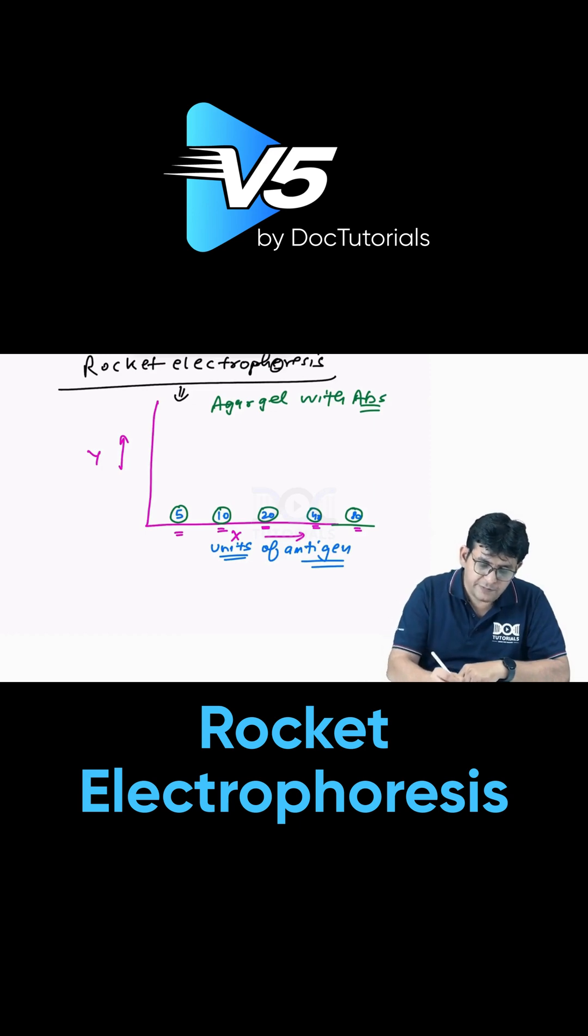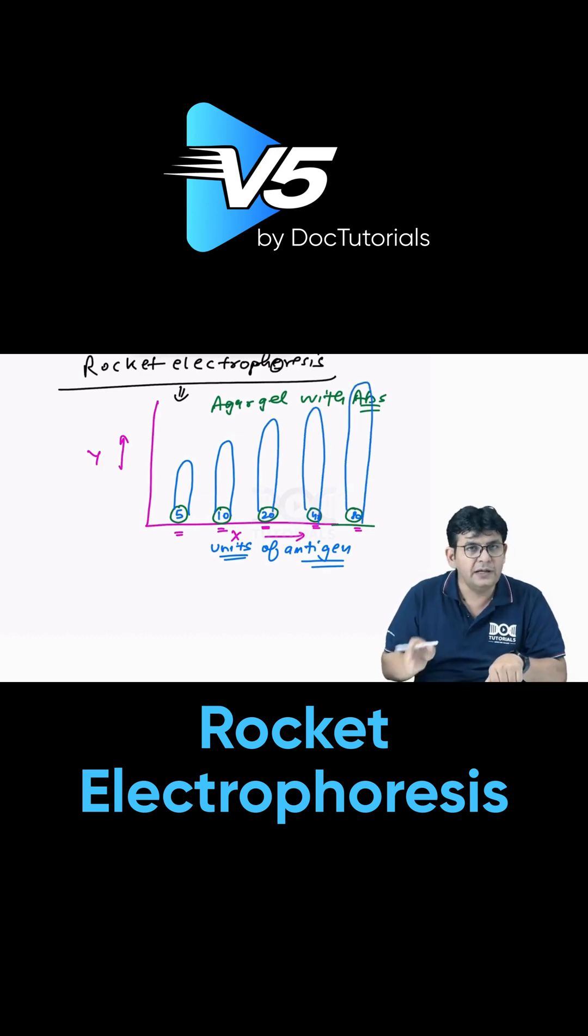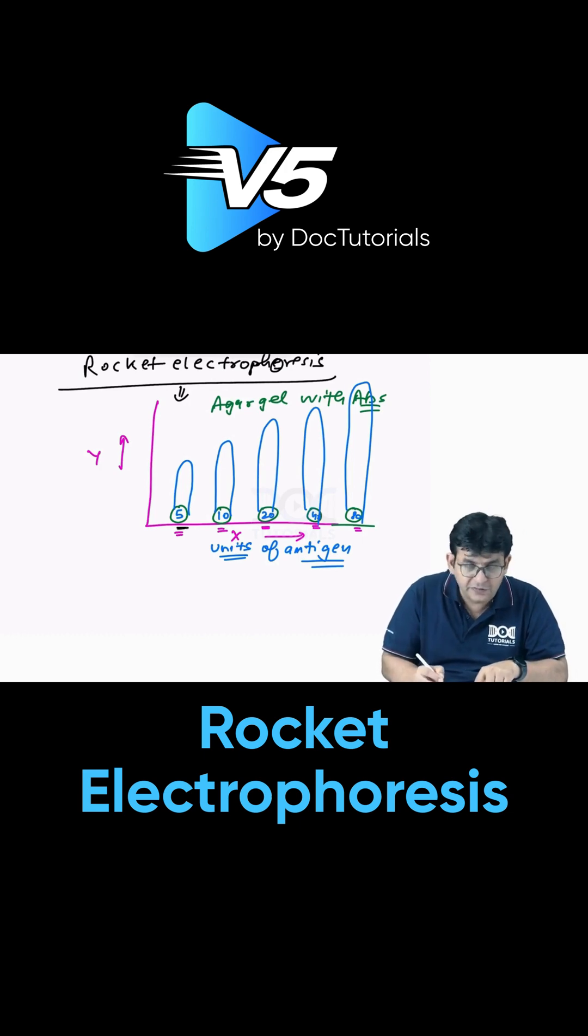In this, you observe that if 5 units of antigen are there, the rocket size will be less. When 10 units of antigen is there, the rocket size is bigger than that. 20 bigger than that, 40 more than that, 80 more than that.